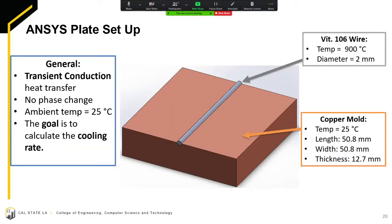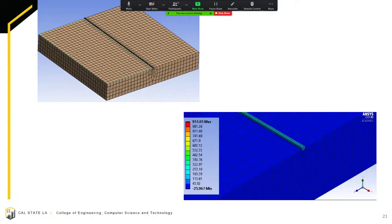This is our ANSYS plate setup. To keep it simple, we made it a transient conduction system, transient meaning thermal changes in respect to time, and conduction meaning two solid bodies thermally interacting. To also keep it simple, there are no phase changes in the simulation. To reiterate, the goal is to calculate the cooling rate. The parameters of Vitreloy 106 wire and copper mold are here as shown. On the left here, this is our ANSYS mesh setting applied to the simulation, and on the right is the ANSYS simulation video showing the bulk metallic glass wire cooling down over time, and this is a looped video.